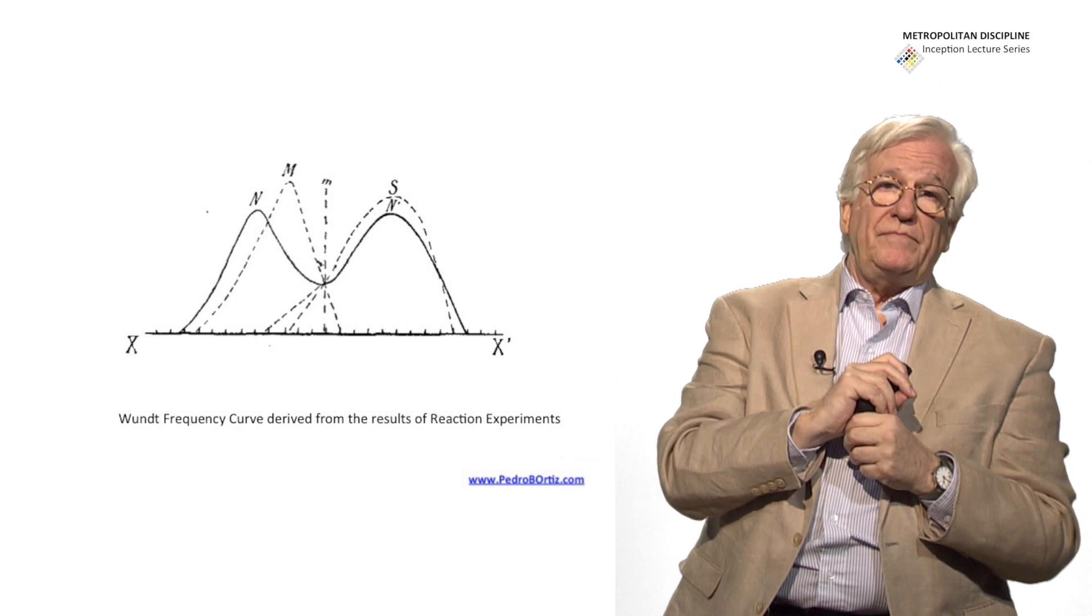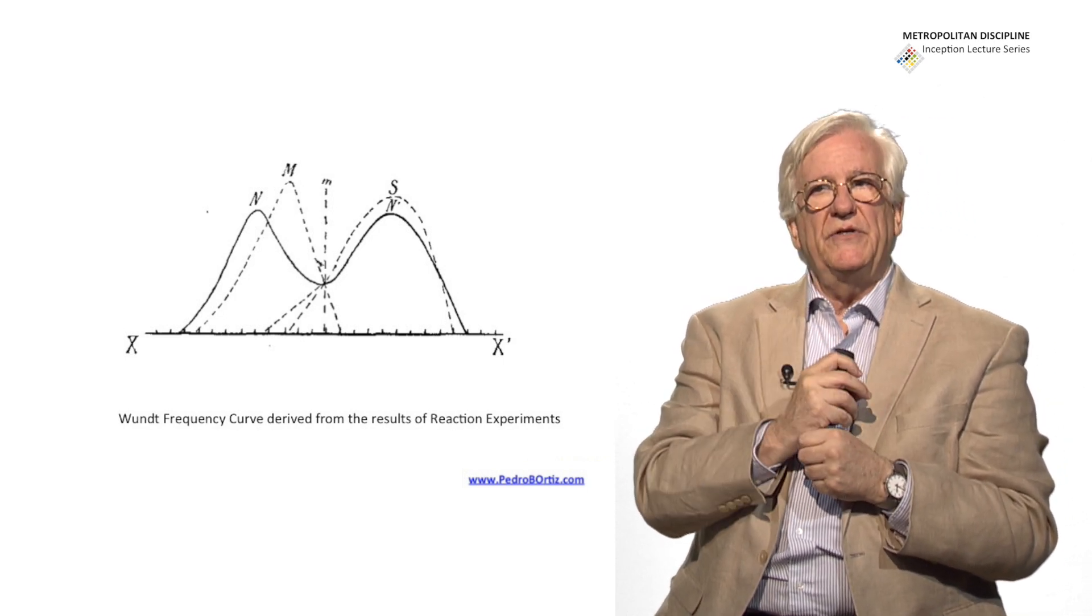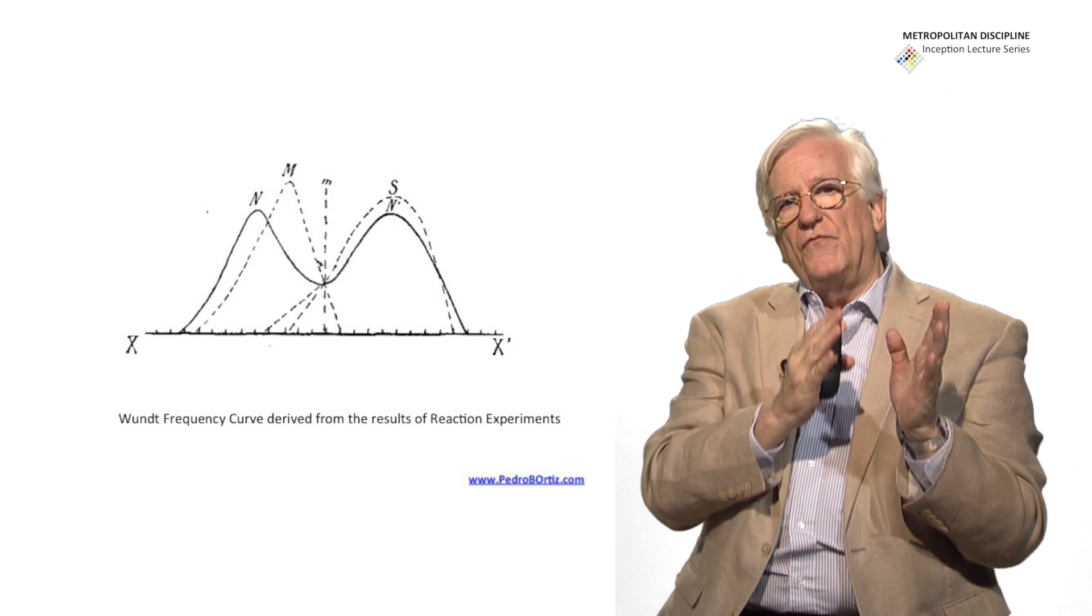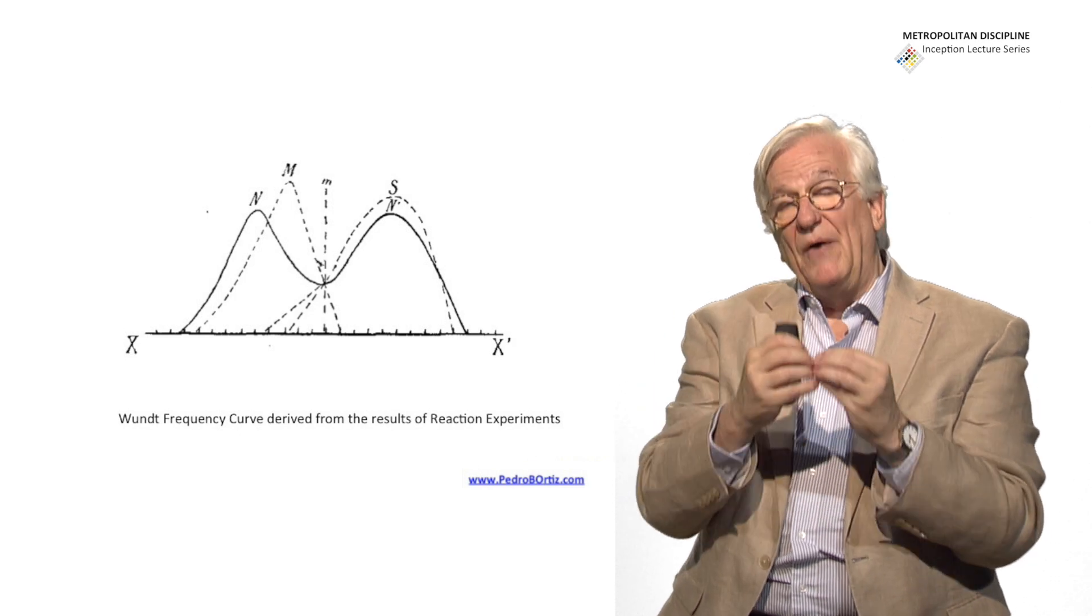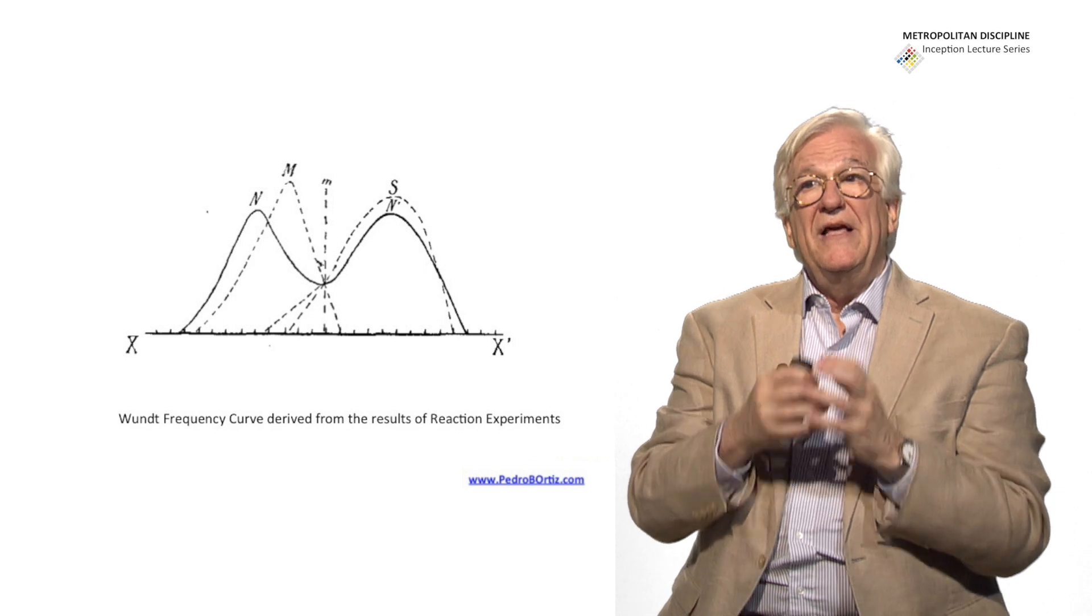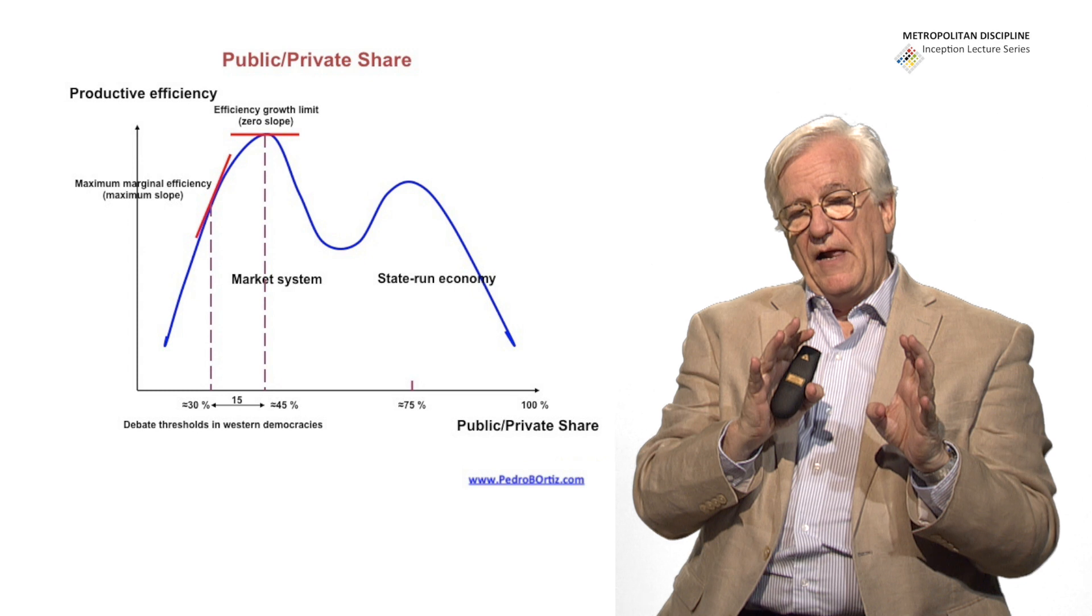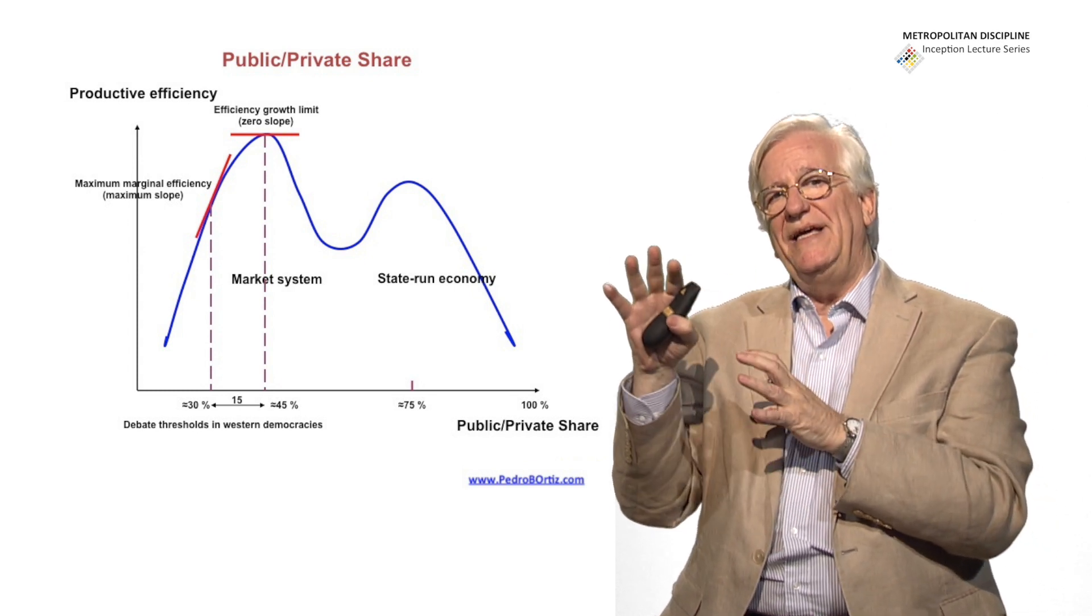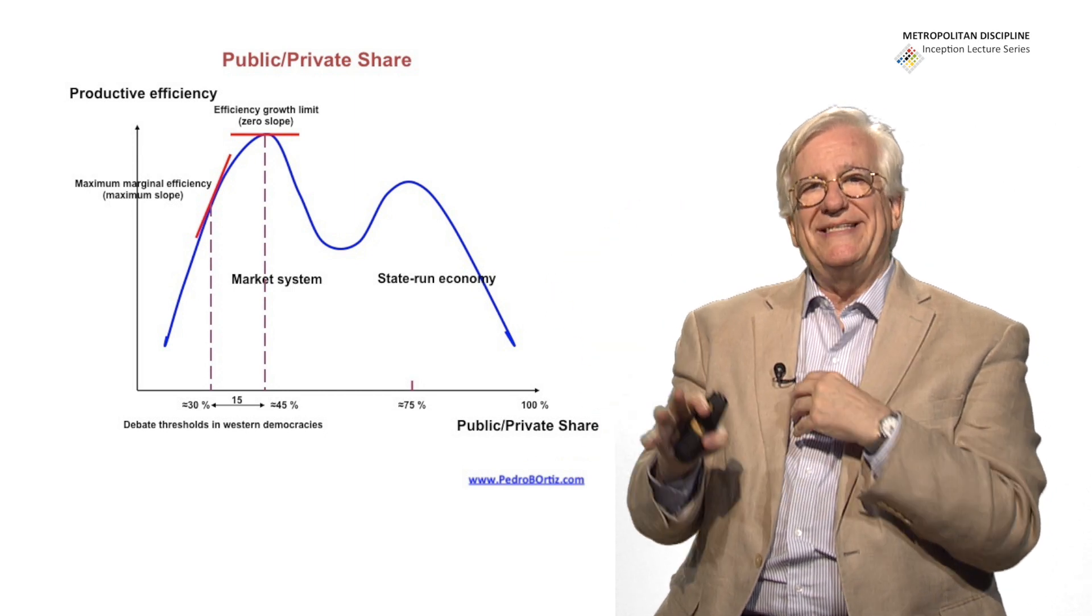Then we have another type of curve, which is the frequency curve, that has two bumps, and you cannot go from one bump to the other without a valley of inefficiency. That is, for instance, the way the governments, the nations work, the market-driven economies versus the economies driven by the government, by the state.